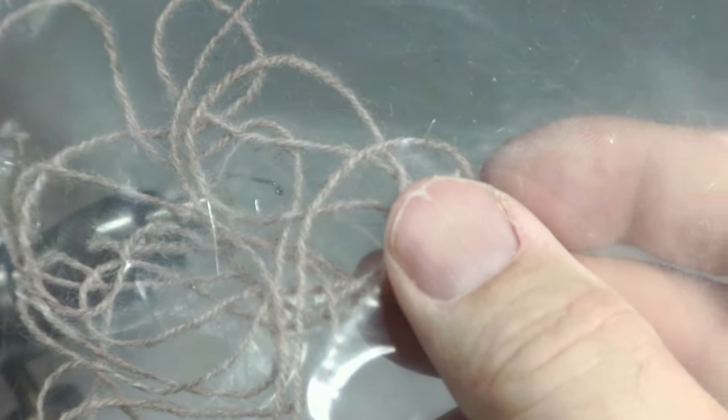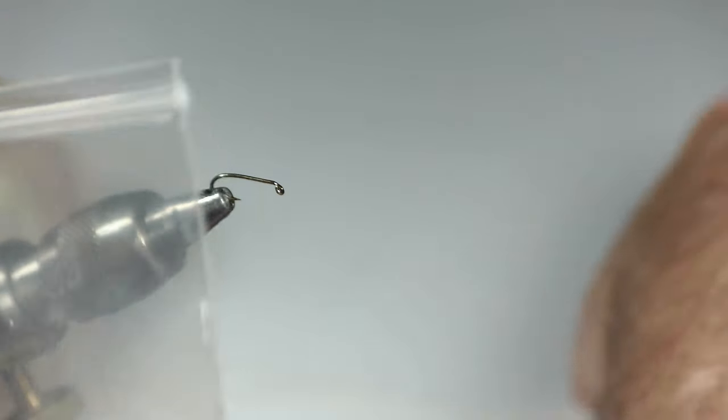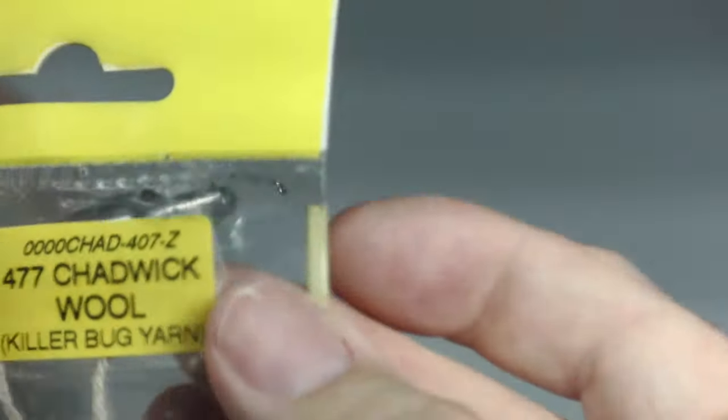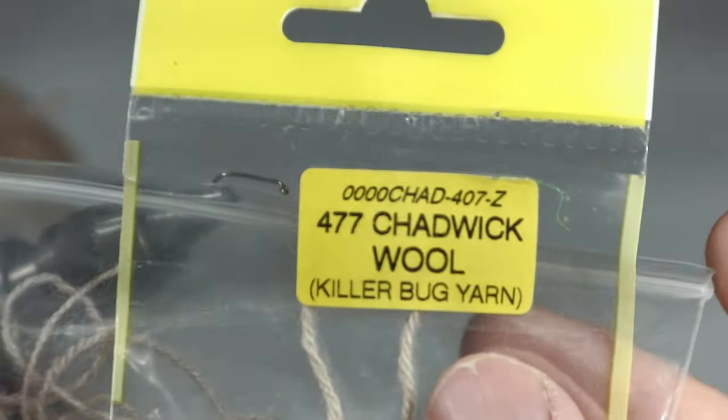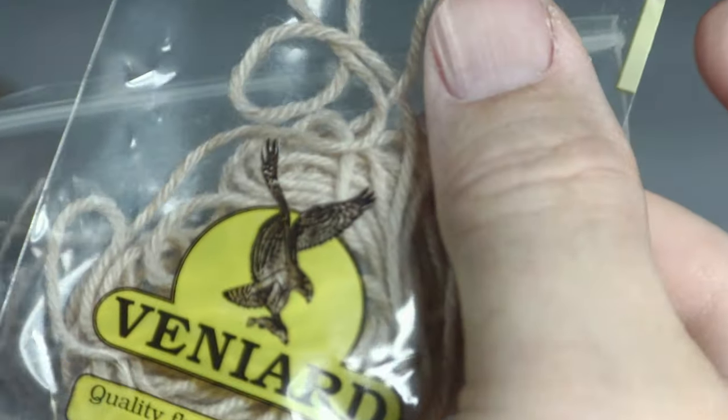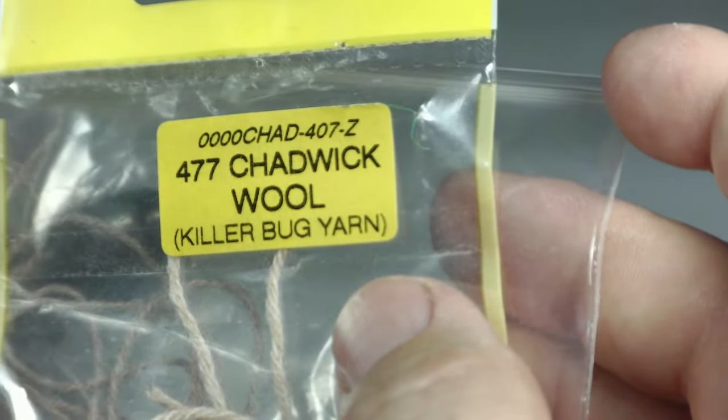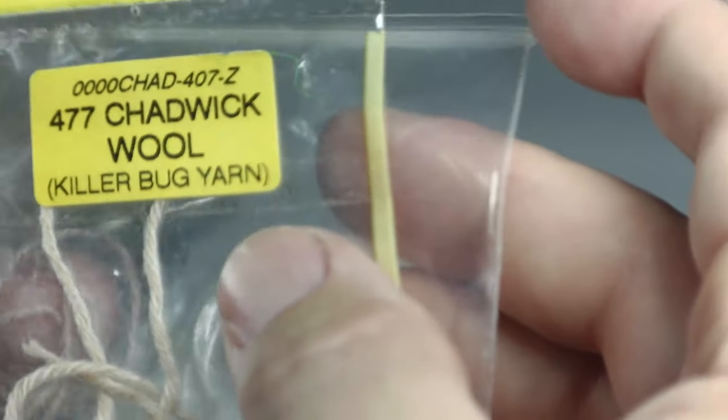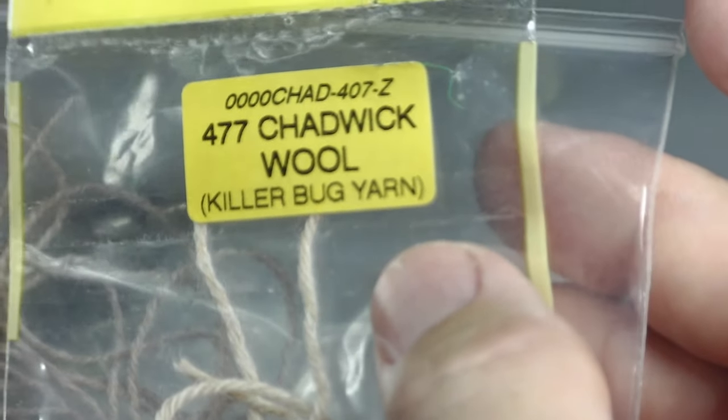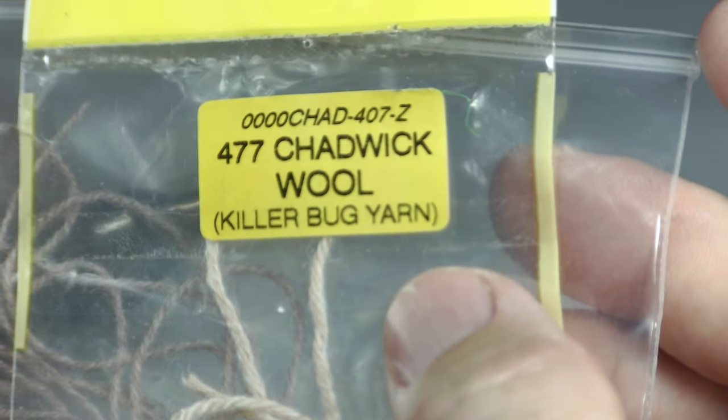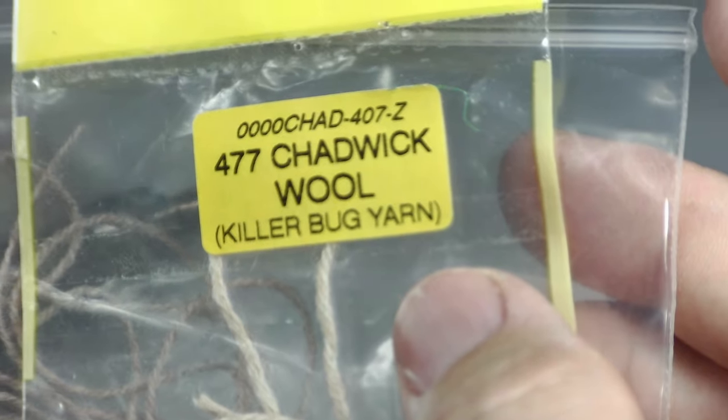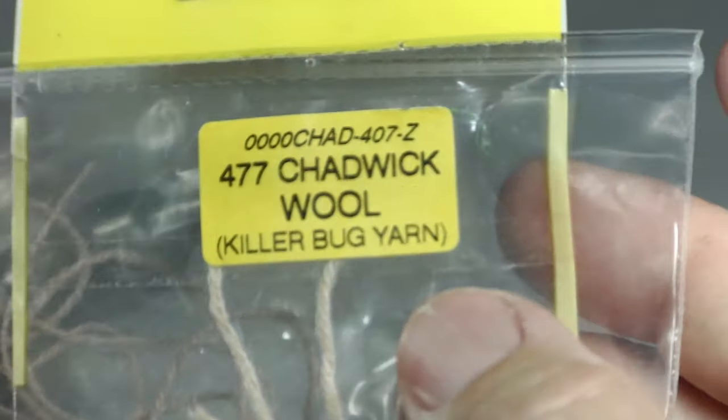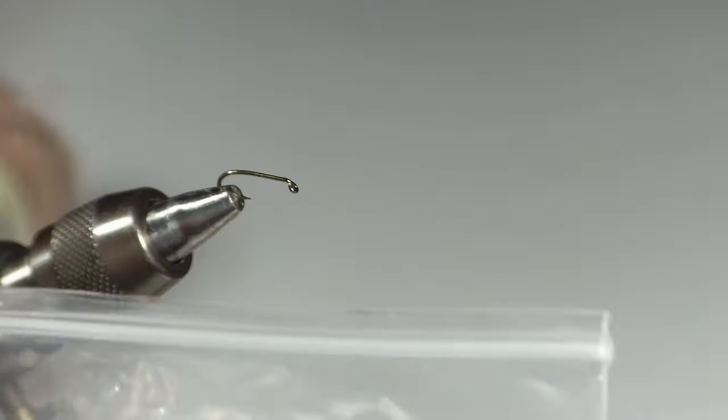So everybody's been trying to copy this stuff. And so a lot of different manufacturers have made wools that are supposed to look like it. If you look at this 477 Chadwick wool from Vinny Art, you'll notice it's a little bit lighter, and it's more of a brown and tan color than the Chadwick supposedly original.